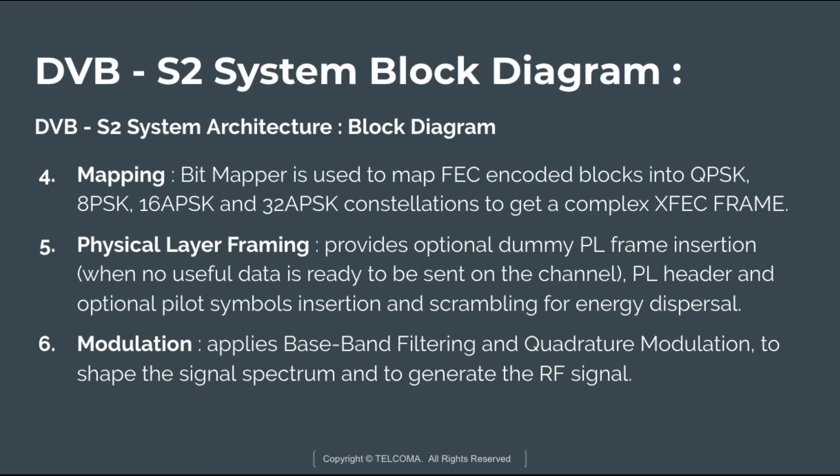Physical layer framing provides optional dummy PL frame insertion, the PL header, optional pilot symbol insertion, and scrambling for energy dispersion. The PL frame is obtained by adding the PL header, which occupies one extra slot and carries information related to the frame type and the physical layer modulation mode.